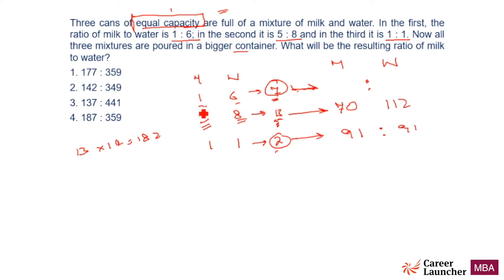Similarly, what about the first one? This is to convert this 7 into 182. What do I need to do? Multiply with 13 into 2, which is 26. So 26 into 1 is 26. 26 into 6 is 156.